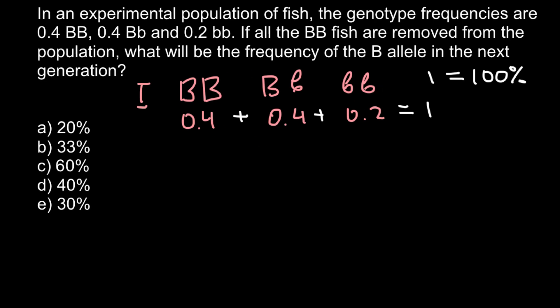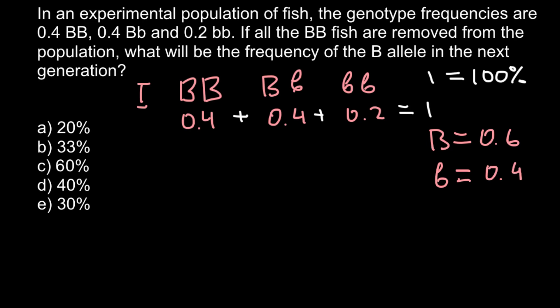Now, what is the frequency of the dominant and recessive alleles? We take half of the heterozygous frequency and add it to each homozygous genotype frequency. So 0.2 plus 0.4 gives us the frequency of the dominant allele at 60%, and 0.2 plus 0.2 gives us the frequency of the recessive allele at 40%. So the dominant allele frequency equals 0.6 and the recessive allele frequency equals 0.4.